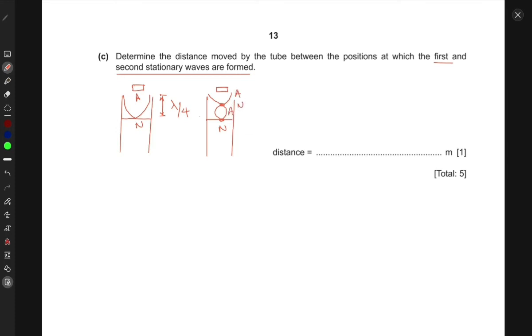When we have a pair of node and antinode, the distance or height is three lambda over four for a second stationary wave. The required distance moved by the tube between the positions is the difference between these two heights: three lambda by four minus lambda by four, which equals lambda over two. Lambda was 0.64 divided by 2, which is 0.32 meters. The distance moved is 0.32 meters.